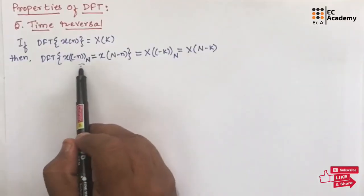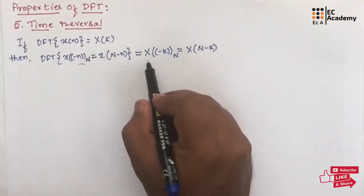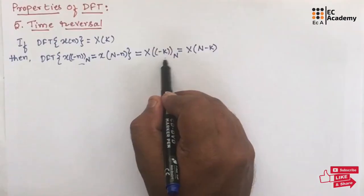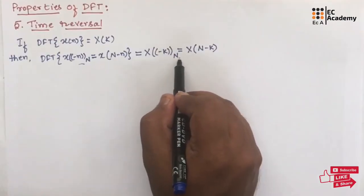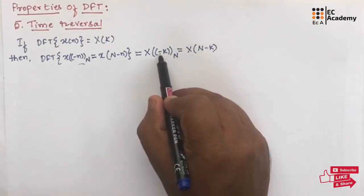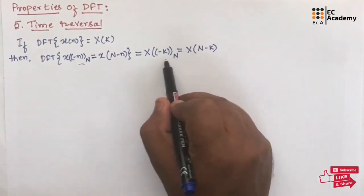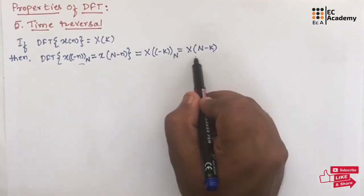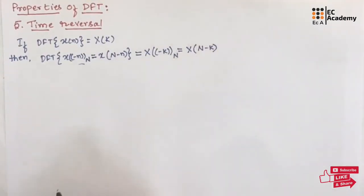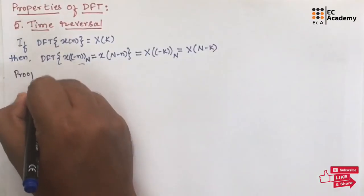So, if we take the DFT of the time reversal signal, then we should get X(-k mod N), which is the same as X(N-k). We can write this equation as X(N-k). Let us prove this.